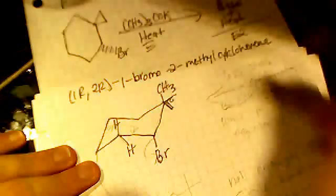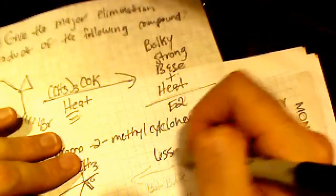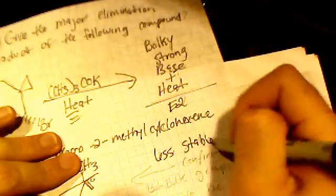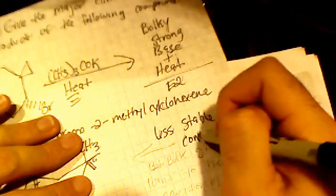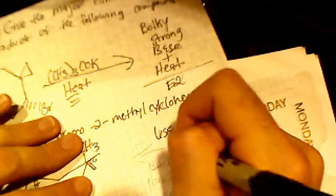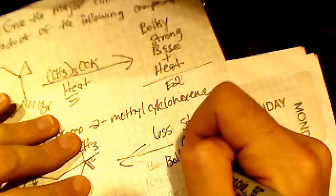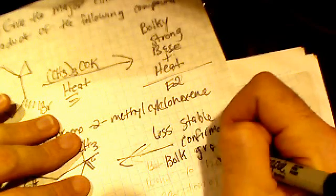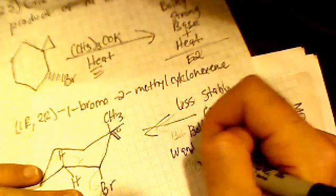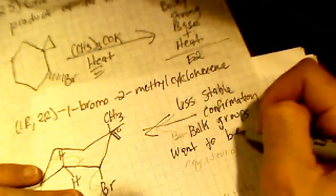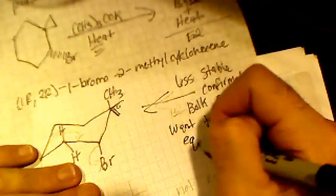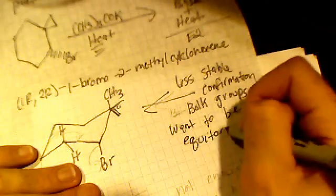The hydrogen... okay, so there's one thing about this - it's the less stable conformation. Right, less stable conformation. Bulky groups, which are the methyl and the bromine, want to be equatorial.